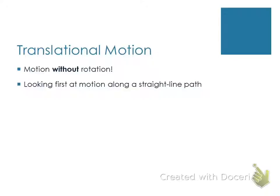We're going to first look at things moving on a very simple straight line path — things moving from point A to point B. They might be slowing down, speeding up, moving backwards or forward. We just have to be really careful with negatives and positives. You'll start to understand that a negative indicates a direction, not necessarily the magnitude of the number. We'll start looking at why these signs influence direction.